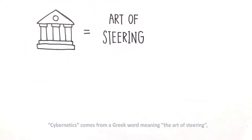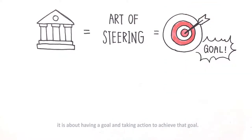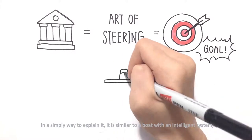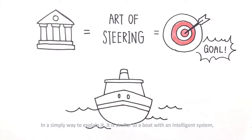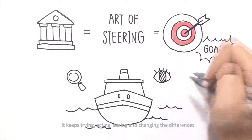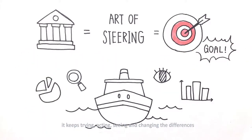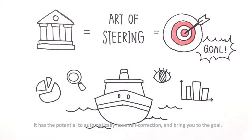Maybe we can take a look at the etymology. Cybernetics comes from a Greek word meaning the art of steering. It is about having a goal and taking action to achieve that goal. In a simple way to explain it, it is similar to a boat with an intelligent system. It keeps trying, acting, seeing and changing the differences by crossing the winds, the waves or the oceans. It has the potential to automatically self-correct and bring you to the goal.